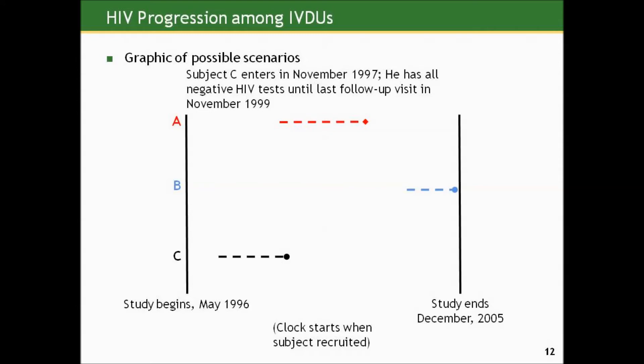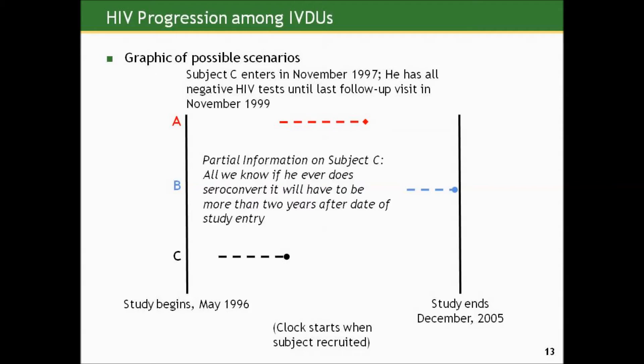Subject C enters in November 1997 and has all negative HIV tests until his last follow-up visit in November 1999. We also have partial information on subject C. All we know is that if he ever does seroconvert, it will have to be more than two years after his date of study entry. He never came back for any subsequent follow-up visits. So we know his time to seroconversion, if it were to happen, was not one year, not 1.5 years — in fact, it would have to be greater than two years. We have a lower bound on that possibility.